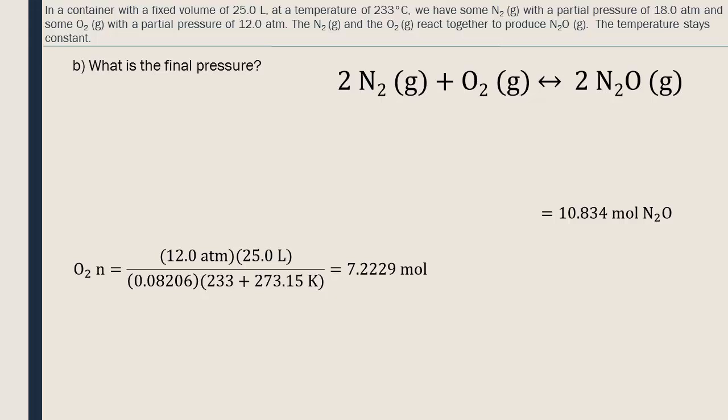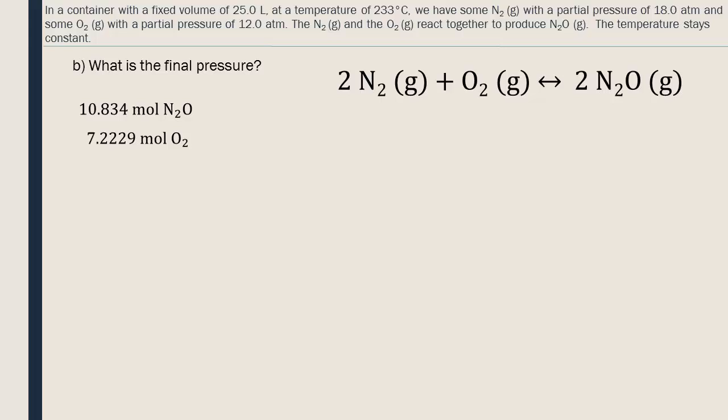For part B of this question, we'll move these numbers to the side to make room for the other calculations. After the reaction, the total pressure will be the sum of the N2O that gets produced, and also the excess oxygen that did not react. There is no more nitrogen because as the limiting reagent, it was completely used up.